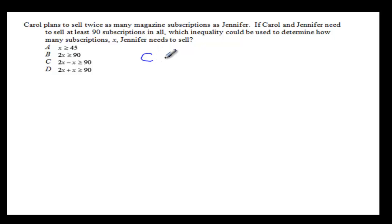Carol needs to sell twice as many magazines as Jennifer. If Carol and Jennifer need to sell at least 90 subscriptions in all, this means Carol plus Jennifer needs to sell more than or equals to 90.